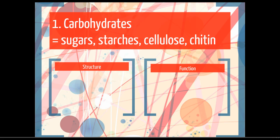So the first biomolecule we want to look at in detail is the carbohydrates. Carbohydrates include sugars, starches, cellulose, and chitin, among a few other things.